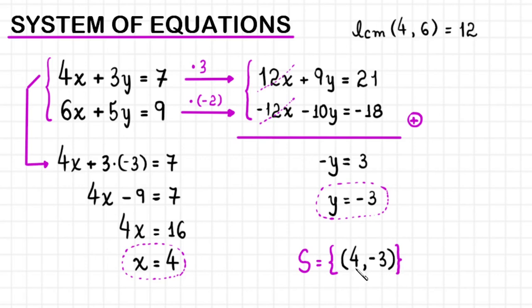When we write like this, 4 is the value of x and negative 3 is the value of y. If you replace x by 4 and y by negative 3 in both original equations, you'll have two true equalities.